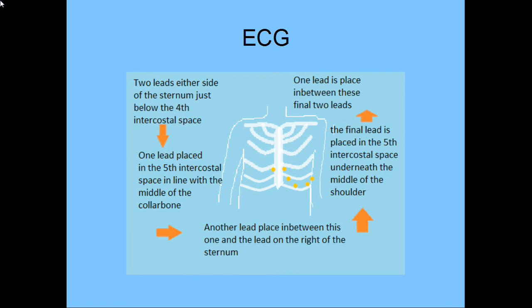Now we have two leads left. One lead is placed in between the lead which is in the middle of the collarbone and the lead on the right of the sternum. And the final lead is placed in between the lead which is in the middle of the shoulder and the lead which is in line with the middle of the collarbone. The other leads are placed on the hands and legs, and these are to cancel out noise from around the body.